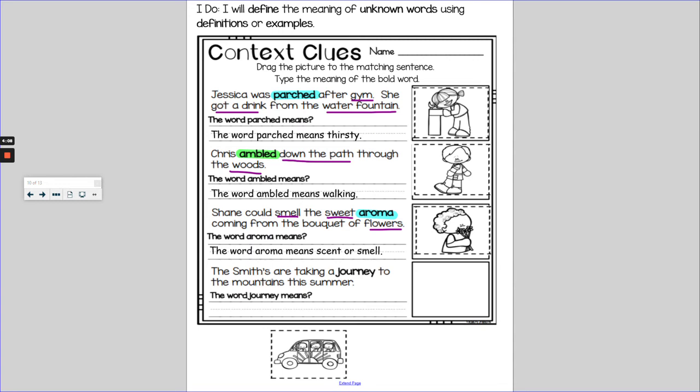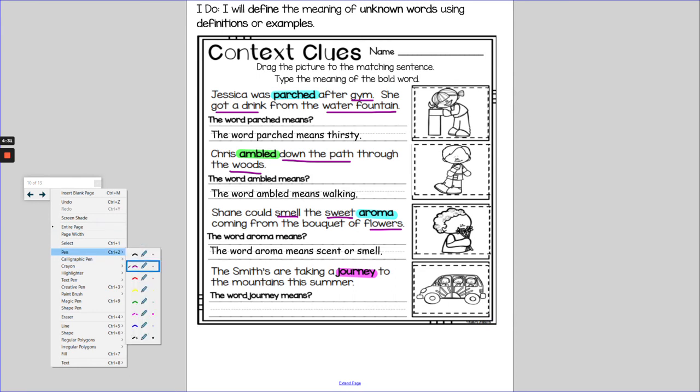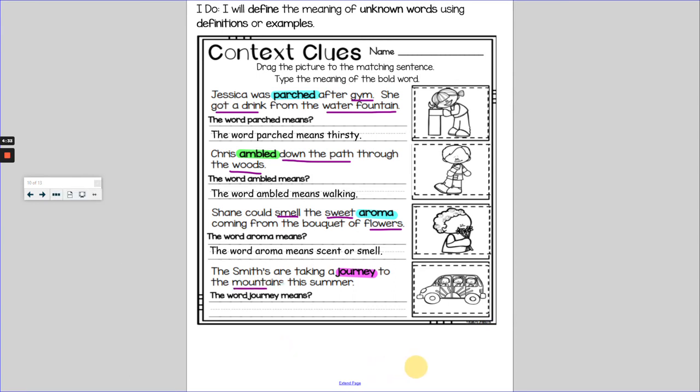And last but not least, I have the Smiths are taking a journey to the mountains this summer. My word is journey. Let's change it to a different color. I have one picture left at the bottom, so I'm going to drag that up because it's very clearly a family taking a trip or going somewhere in their van. And according to my sentence, they are going to the mountains this summer. So the Smiths are taking a trip to the mountains this summer would make sense for that word journey, trip.